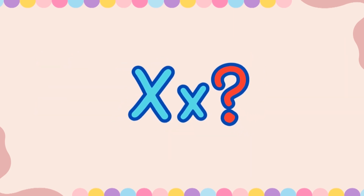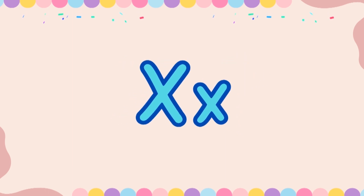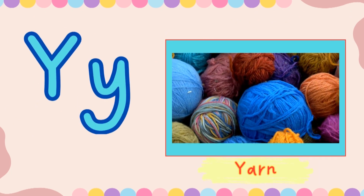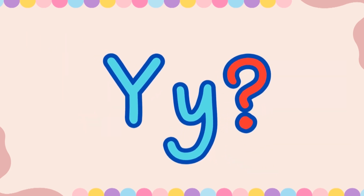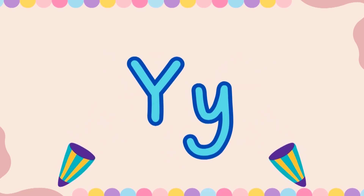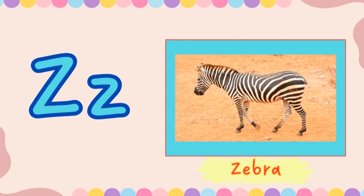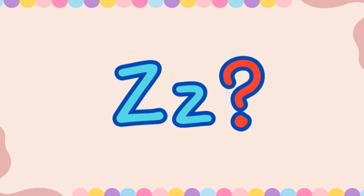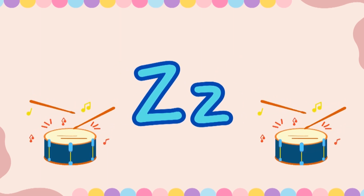This is letter X. What letter is this? X! Very good! This is letter Y. And Y is for Yarn. What letter is this? Y! Very good! This is letter Z. And Z is for Zebra. What letter is this? Z! Very good!